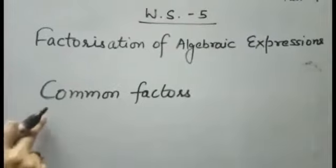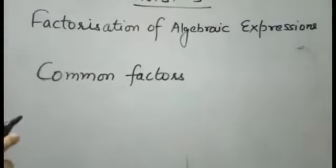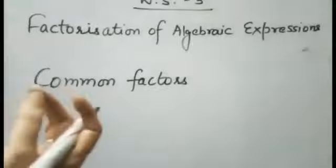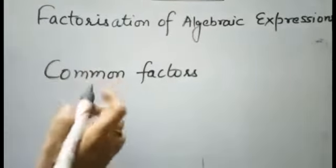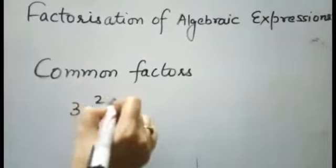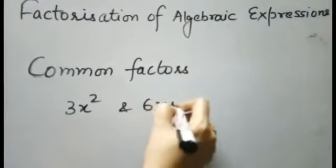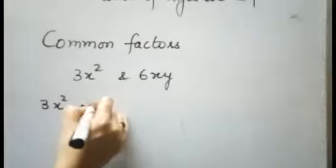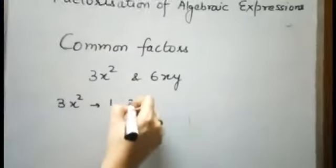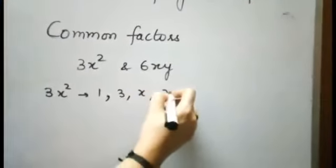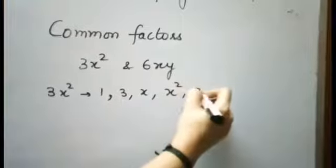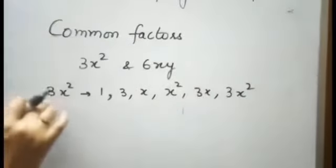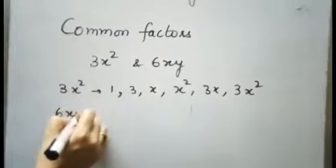Now the next concept is common factors. We are going to talk about the common factors of algebraic terms. I am taking two monomials: 3x² and 6xy. First, I am going to write the factors of 3x²: these are 1, 3, x, x², 3x, and 3x².